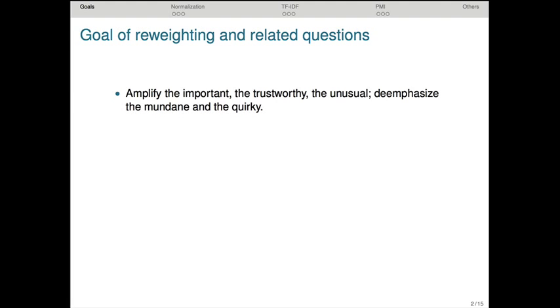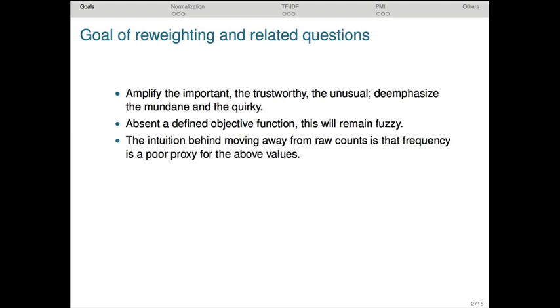The goal of reweighting in broad terms is to amplify the things in your data that are important, trustworthy, and unusual, while de-emphasizing the things that are mundane, quirky, and might be simply mistakes. Absent a defined objective function, this will remain fuzzy, and we'll look at approaches later that specify a precise objective. But the intuition is clear: we want to move away from raw counts because frequency in itself is a poor proxy for the semantic values we're targeting.